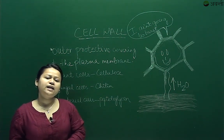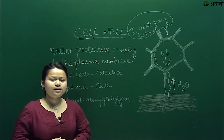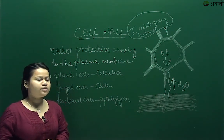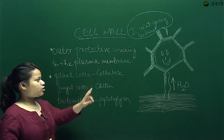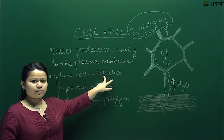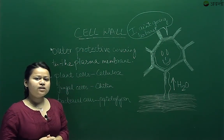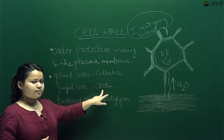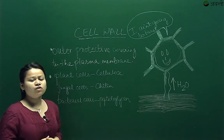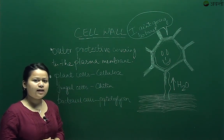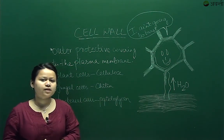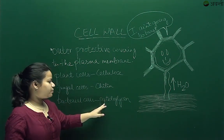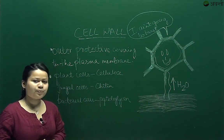In the case of a plant cell, the cell wall is made up of a substance called cellulose. In the case of a fungal cell, it is made up of chitin. And in the case of a bacterial cell, it is made up of a substance called peptidoglycan.